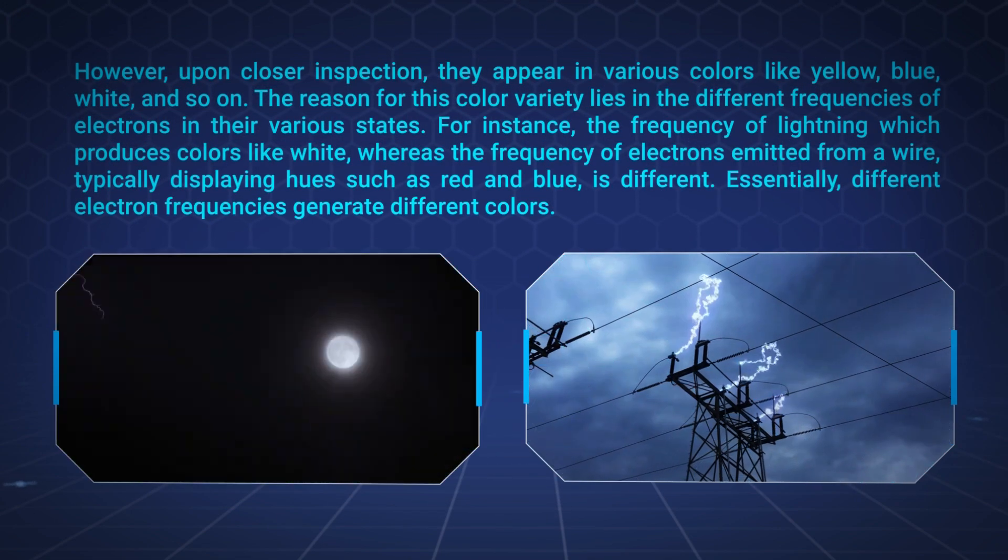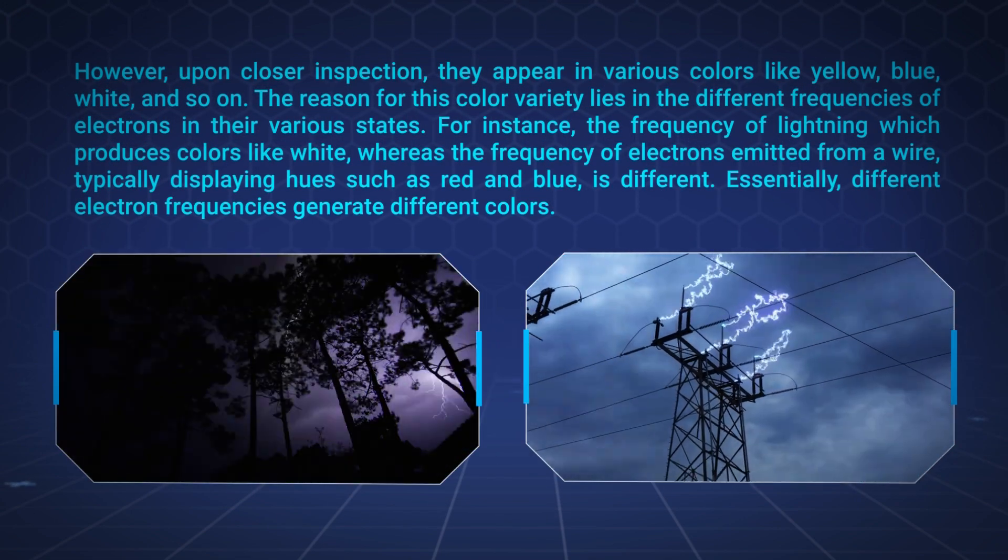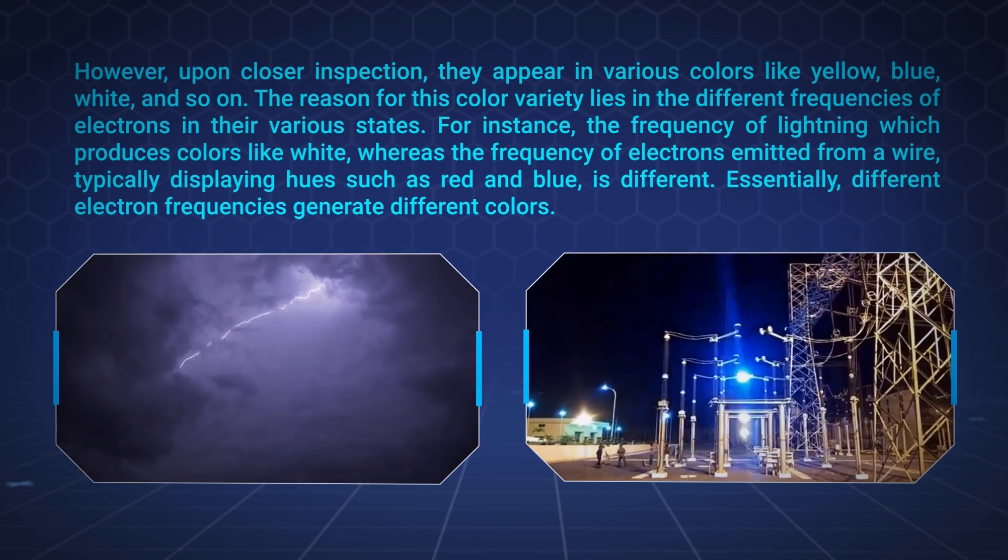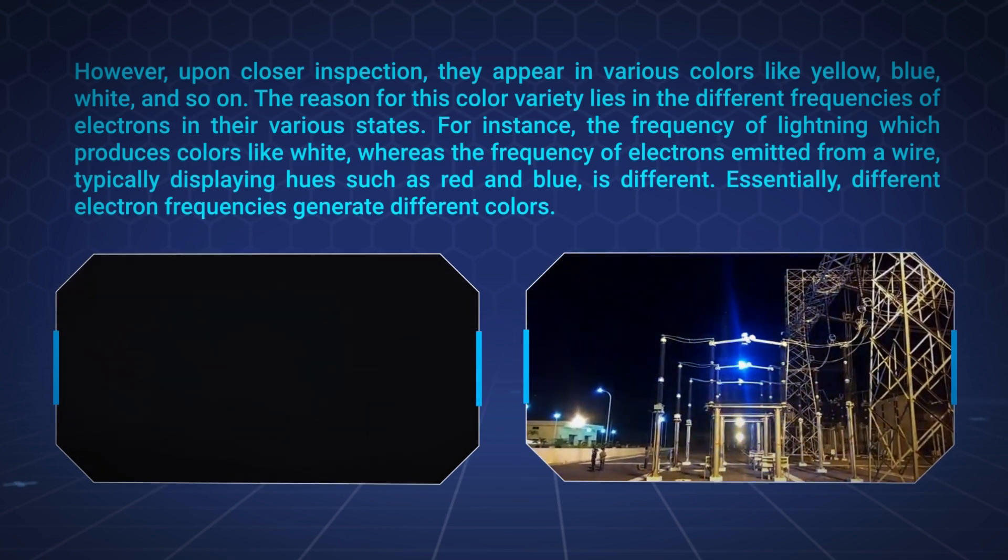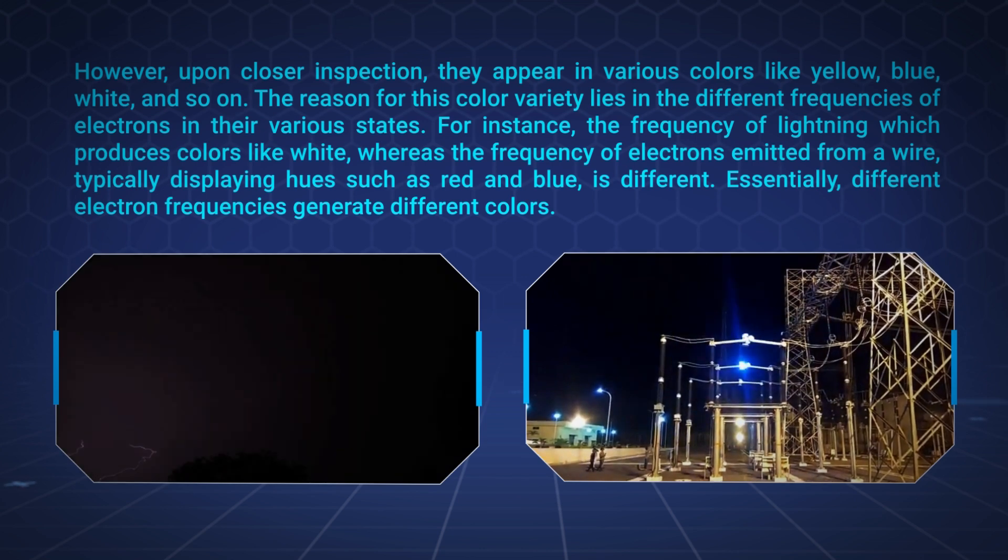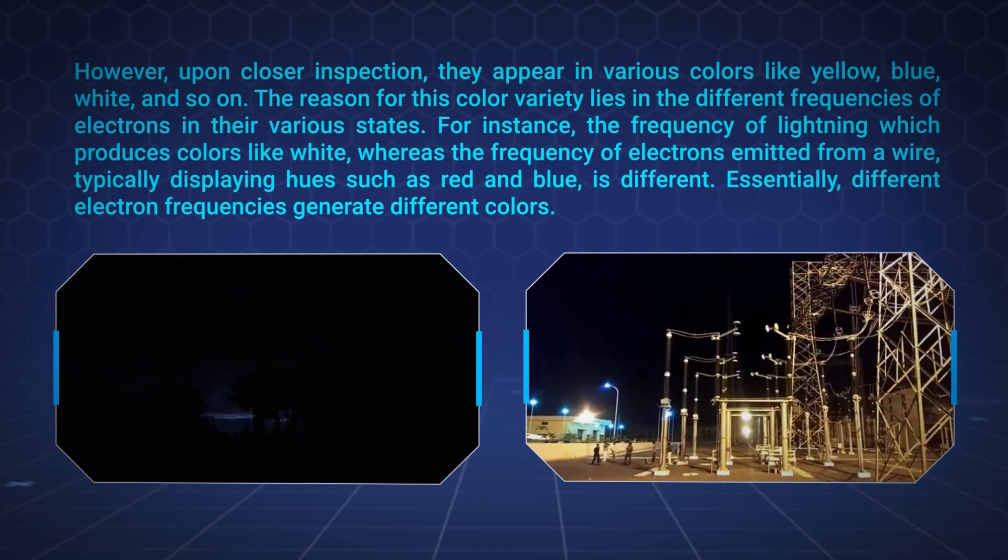However, upon closer inspection, they appear in various colors like yellow, blue, white, and so on. The reason for this color variety lies in the different frequencies of electrons in their various states.